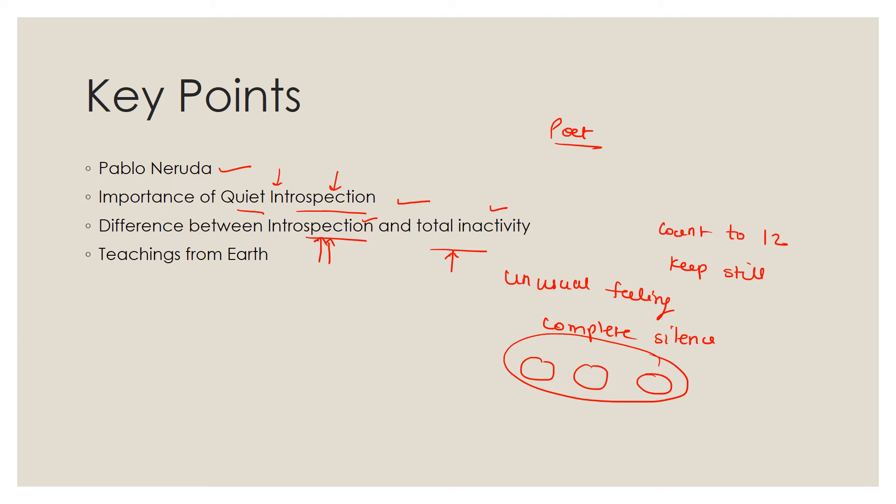And find no time for quiet introspection. This is a sad situation for the poet. Because for the poet, we can understand ourselves only if we stop all our activities for a few moments. Count up to 12. And then, it's like meditation. You are finding yourself. Do some quiet introspection.